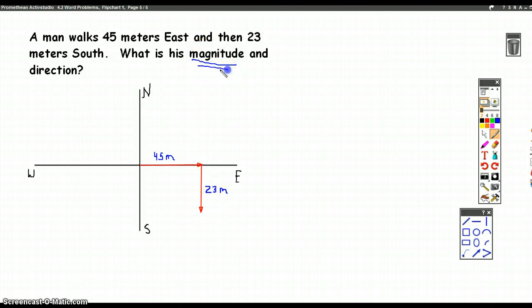What is his magnitude and direction? So magnitude, what we mean by magnitude is, we mean, mathematically, we just mean the length of the hypotenuse of this right triangle. What we mean is the length of this. In other words, if he walks 45 meters this way and 23 meters this way, we just want to know how far is he from his starting point. That's the magnitude.